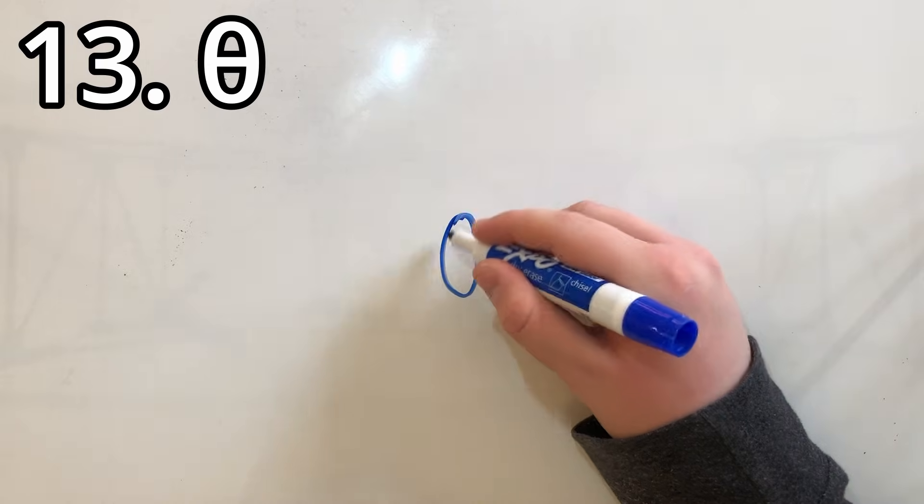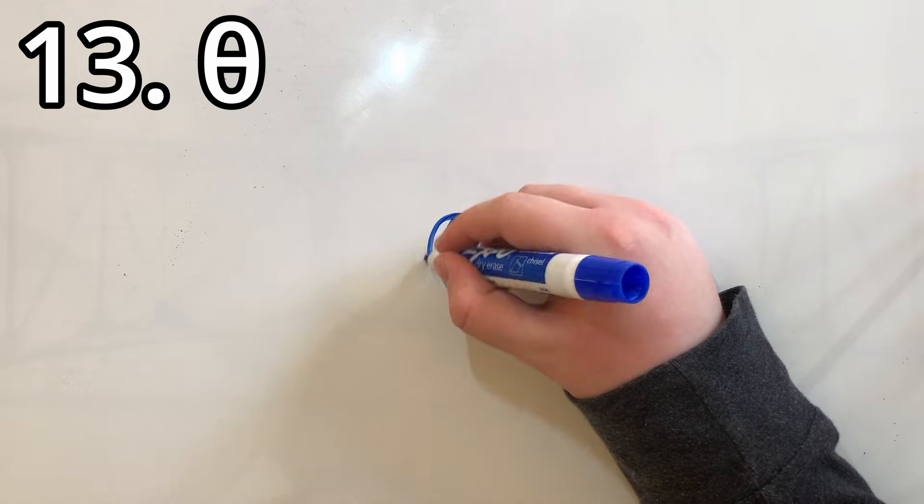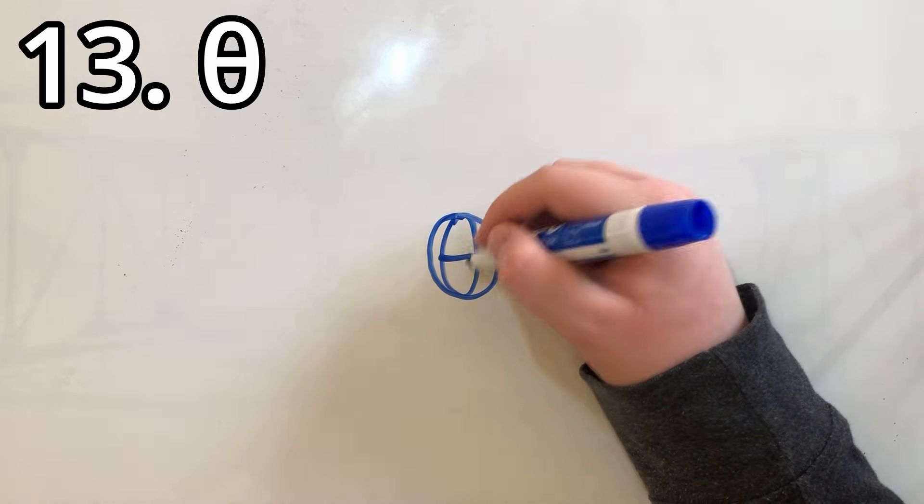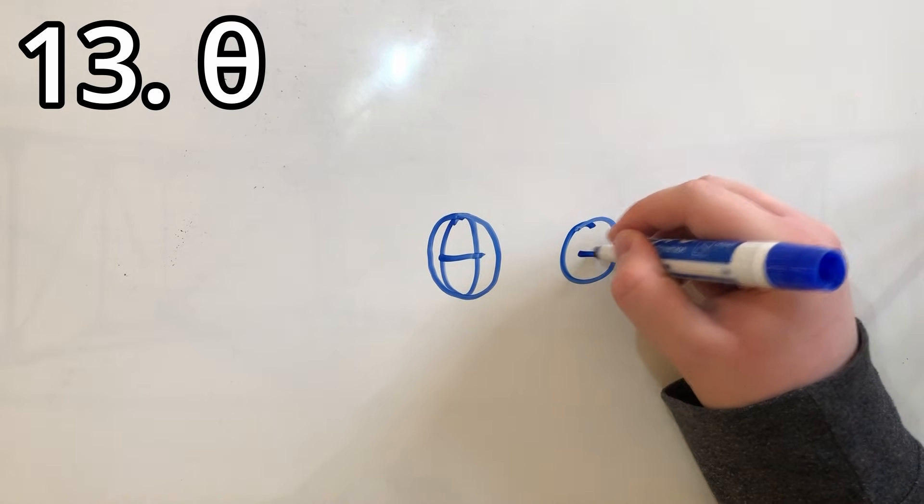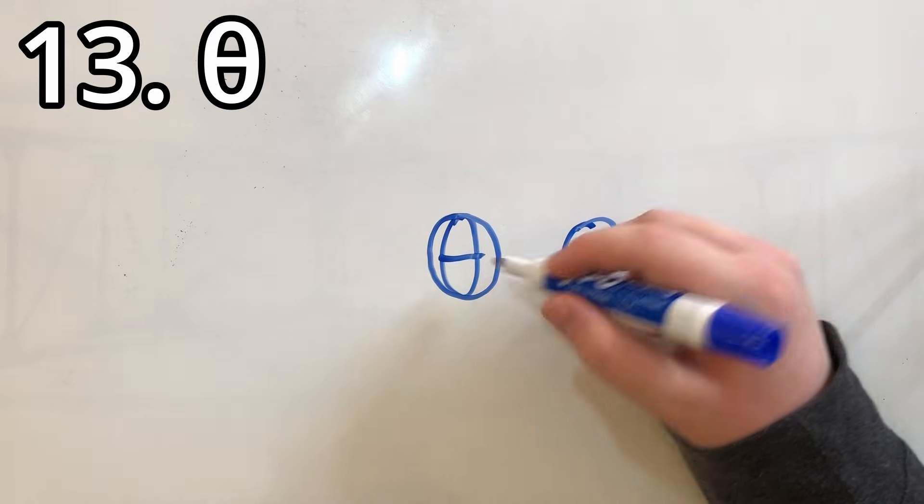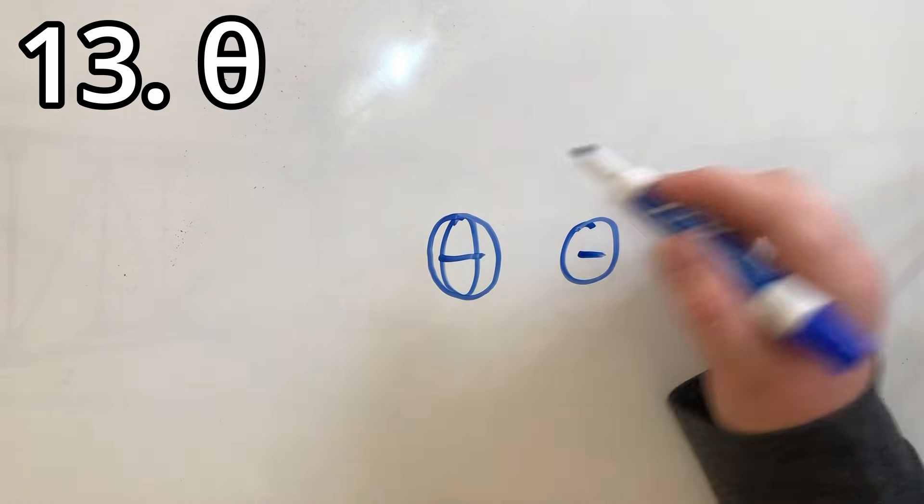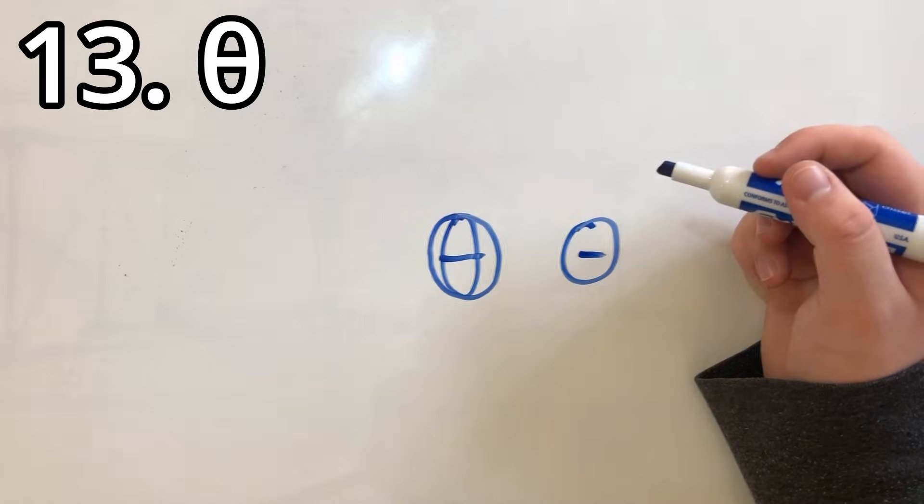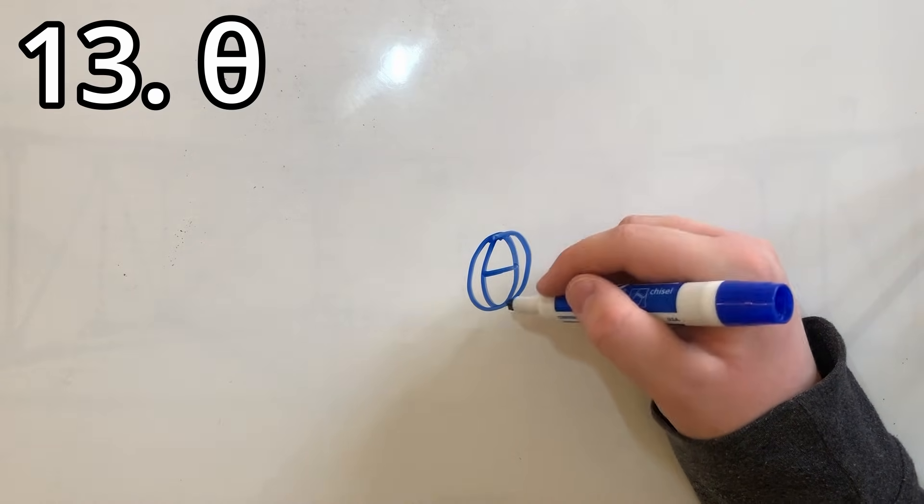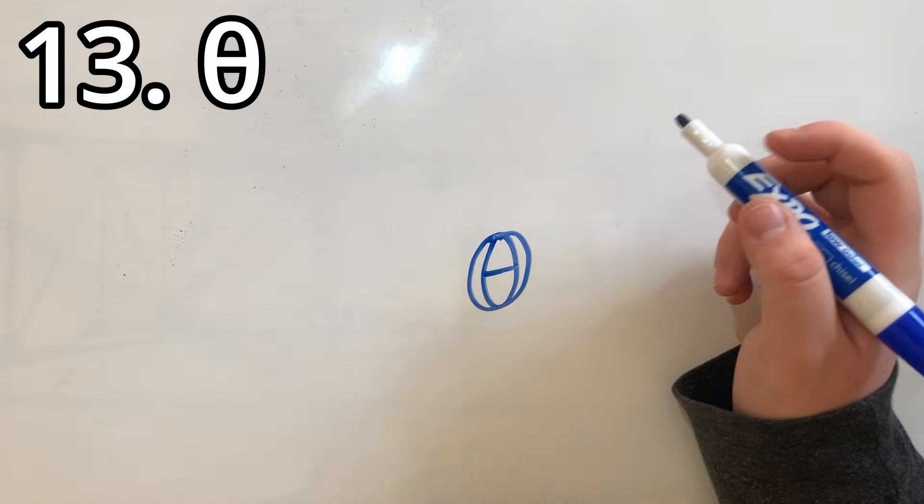In spot number 13, we have Theta. The downside to this one is you can't really get rid of the Oval. The upside is a capital Theta, its line doesn't go all the way through it, so the line's already there. All you need, already there. So that's convenient. But again, you can't get rid of the Oval, so it's really hard to try and disguise that.